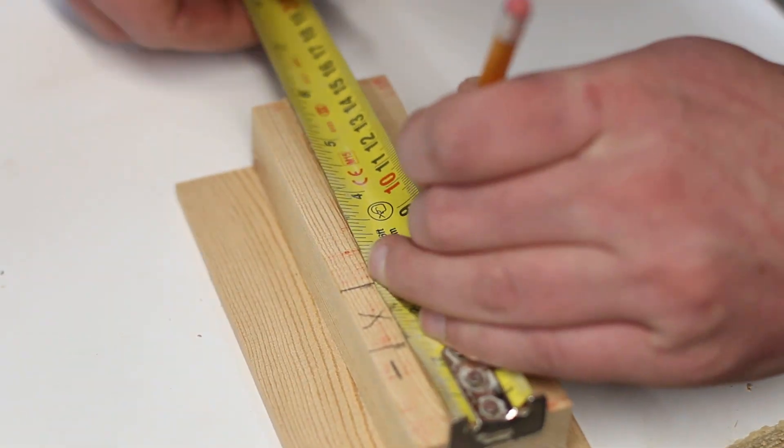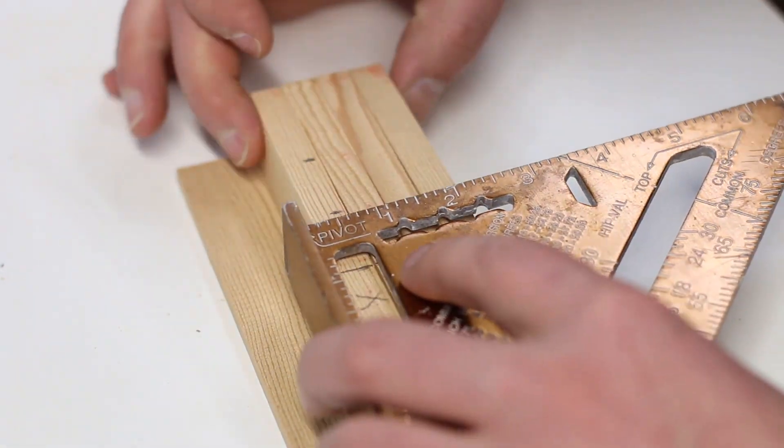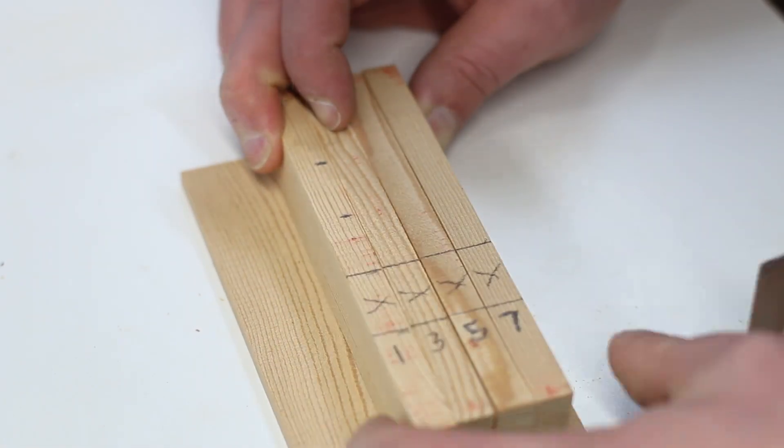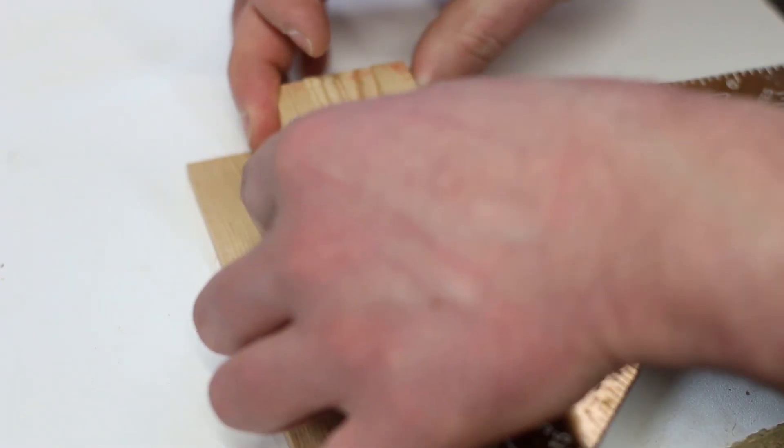I then marked out the slot where the key will go. This is similar to the deadbolt slot but will only be cut on pieces 3, 5, and 7. I made marks at 3 and a half and 4 and a half inches and again finished the lines using a square.